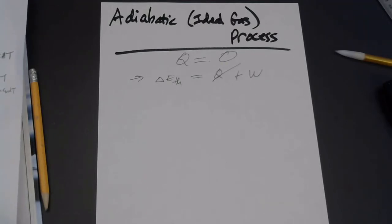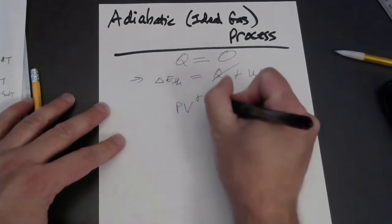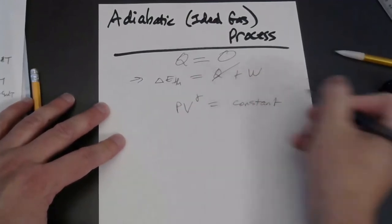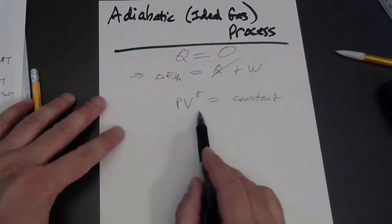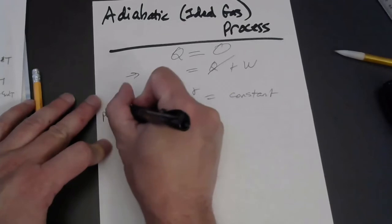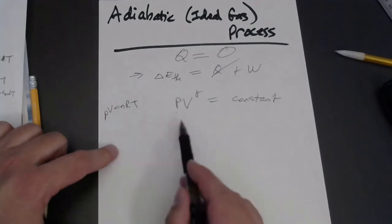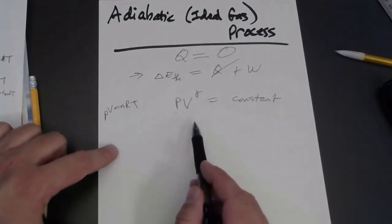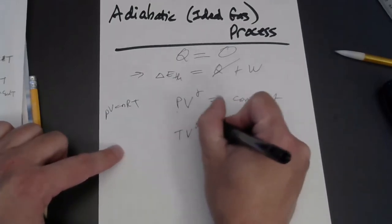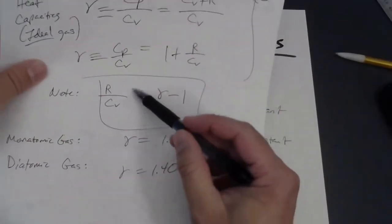There are two equations for adiabatic ideal gas processes, on page 535. First: PVᵞ = constant. Depending on which variables you're given, you can also use the ideal gas law to express this in terms of T and V: TVᵞ⁻¹ = constant. Note that γ − 1 = R/Cᵥ, so we may see that pop up in our derivation. We've covered the P-V and T-V forms; you could also derive a T-P form using the ideal gas law.